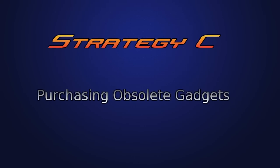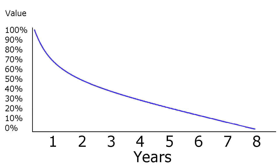Okay, now let's talk about strategy C. Strategy C is definitely not for everyone. If you look at this lifespan chart again, you'll see that you can buy really old gadgets for almost nothing. Some gadgets at this stage of life are virtually useless.